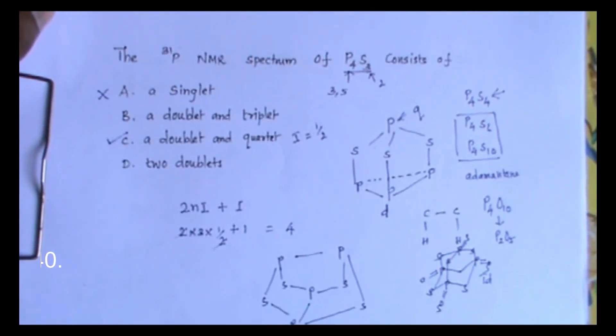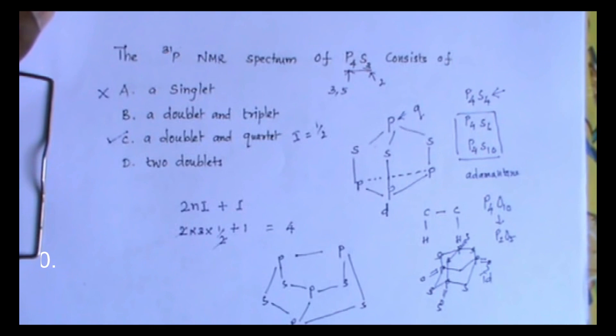In P4S6, the valence of phosphorus will be only 3. But when you go for P4S10, the phosphorus valence will be 5.